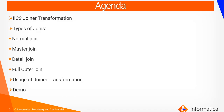The agenda in this video would be a brief introduction of a joiner transformation, types of joins offered by IICS like normal join, master join, detail join, full outer join, along with the uses of a joiner transformation as per the requirement. We will also be showing a quick demonstration on how to create and use a joiner transformation in IICS.